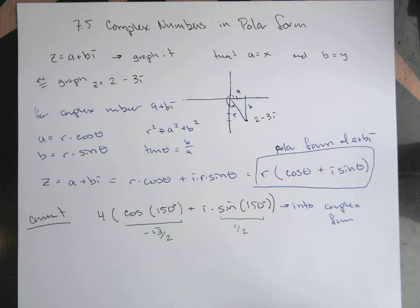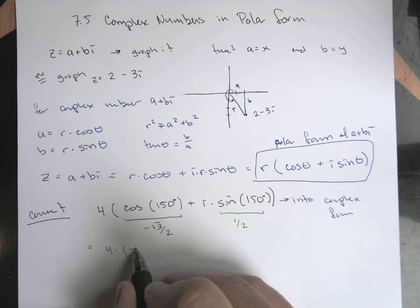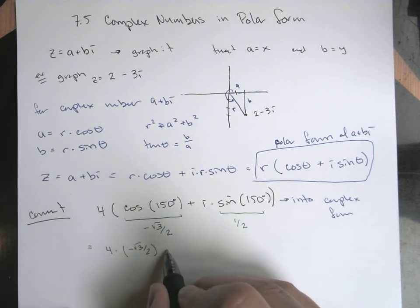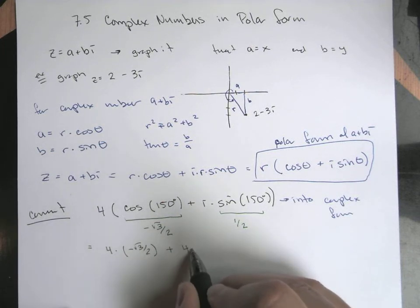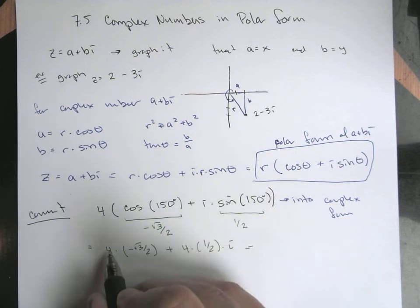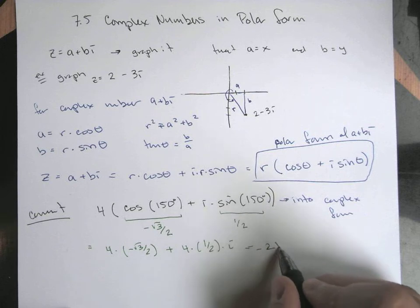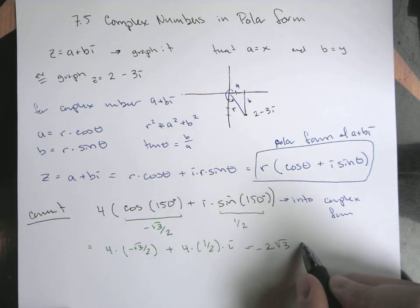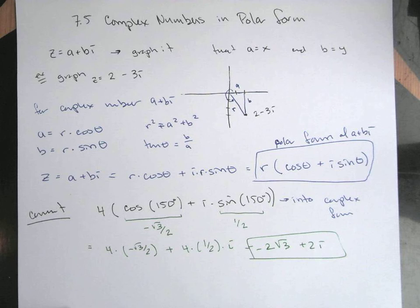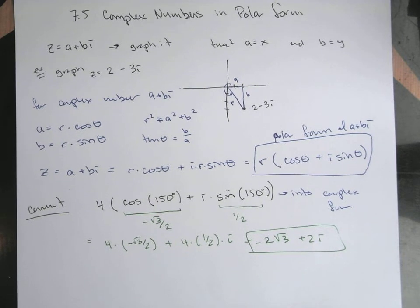So this is essentially 4 times, right, negative root 3 over 2 plus 4 times 1 half times i. This is going to write just sort of reduced down. So this is going to be negative 2 root 3 plus 2i. So we just kind of evaluate it, just sort of run through the arithmetic, and we get our value.